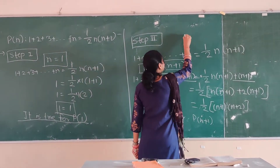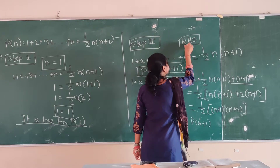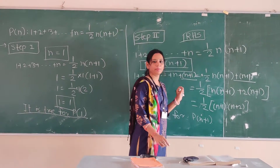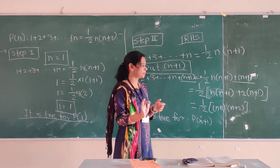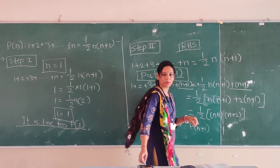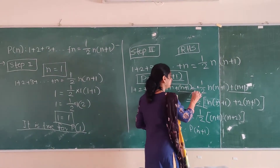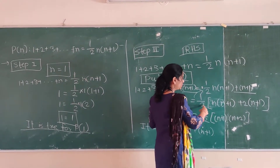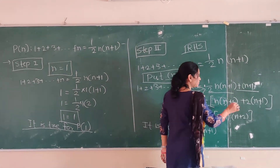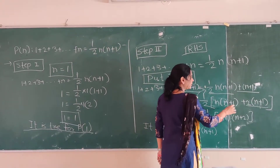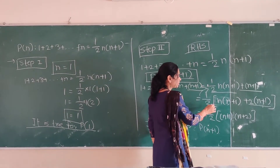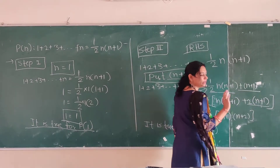As stated in the last lecture, we focus on solving the RHS. So we have: 1/2 times n times (n+1) plus (n+1). We modify that expression to 1/2 times n times (n+1) plus 2(n+1). Multiplying 1/2 with 2 cancels the 2, giving n+1. So we now have 1/2 times n times (n+1) plus 2 times (n+1).